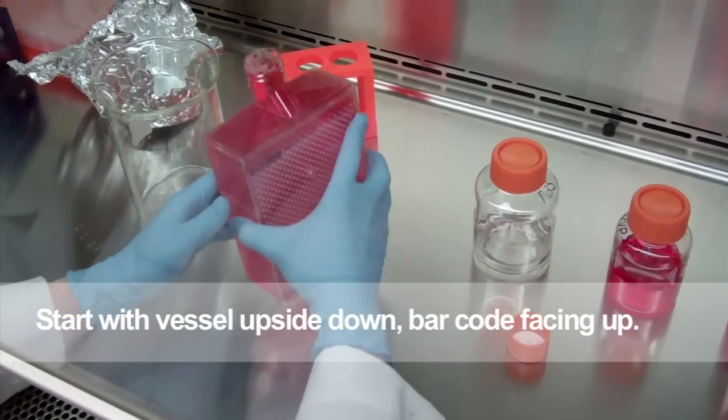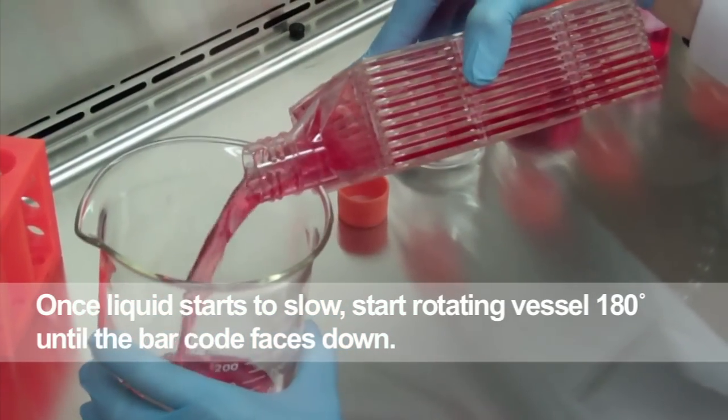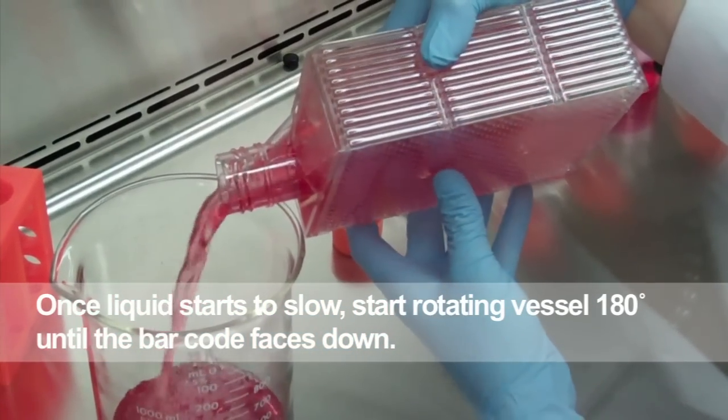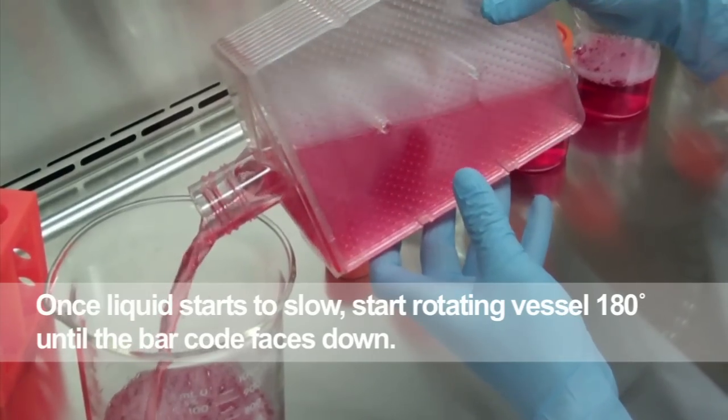When pouring, start with the vessel upside down or the barcode facing up. Once the liquid starts to slow down, start rotating the vessel 180 degrees until the barcode is facing down.